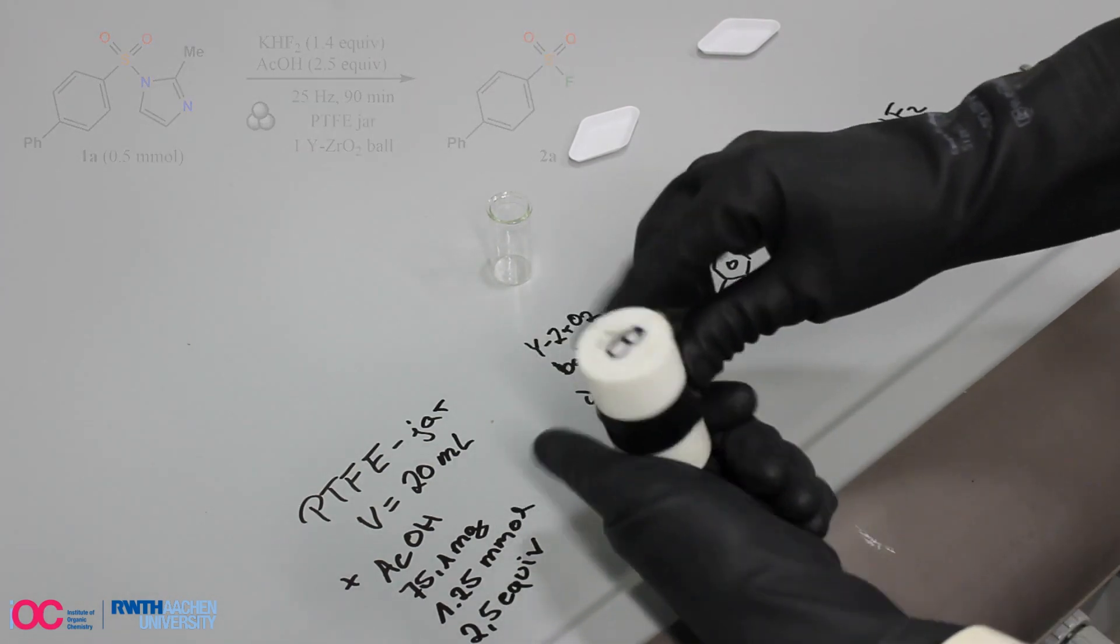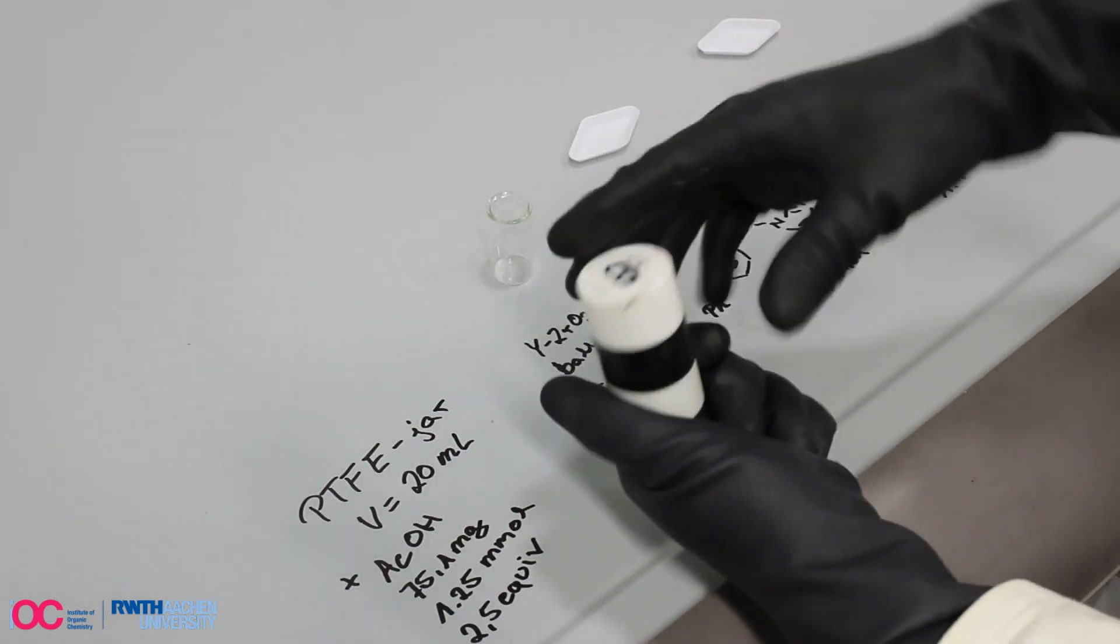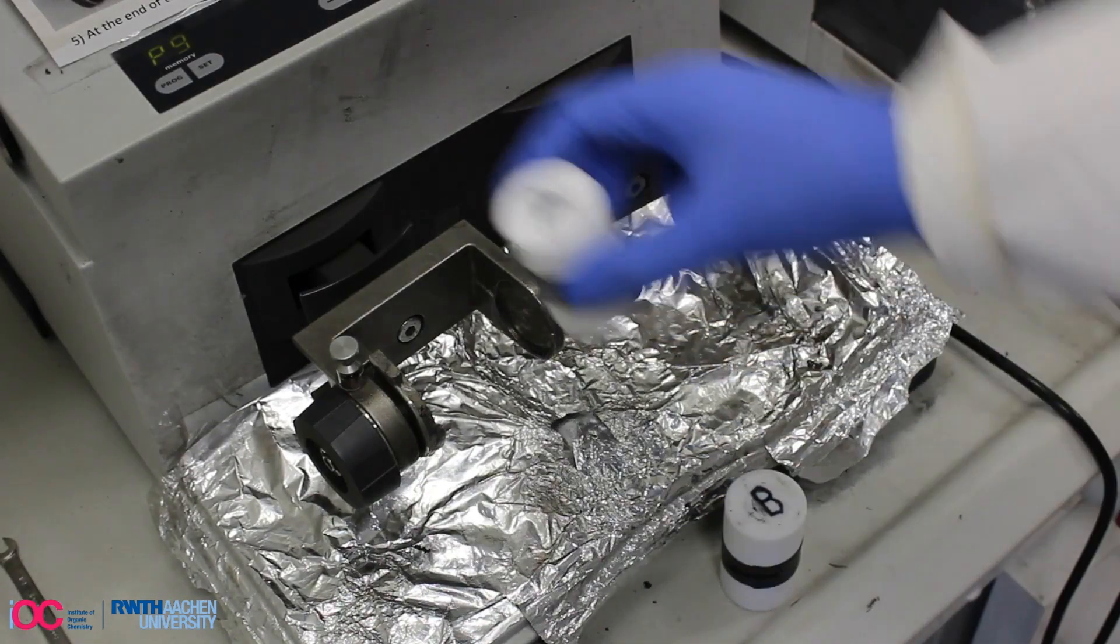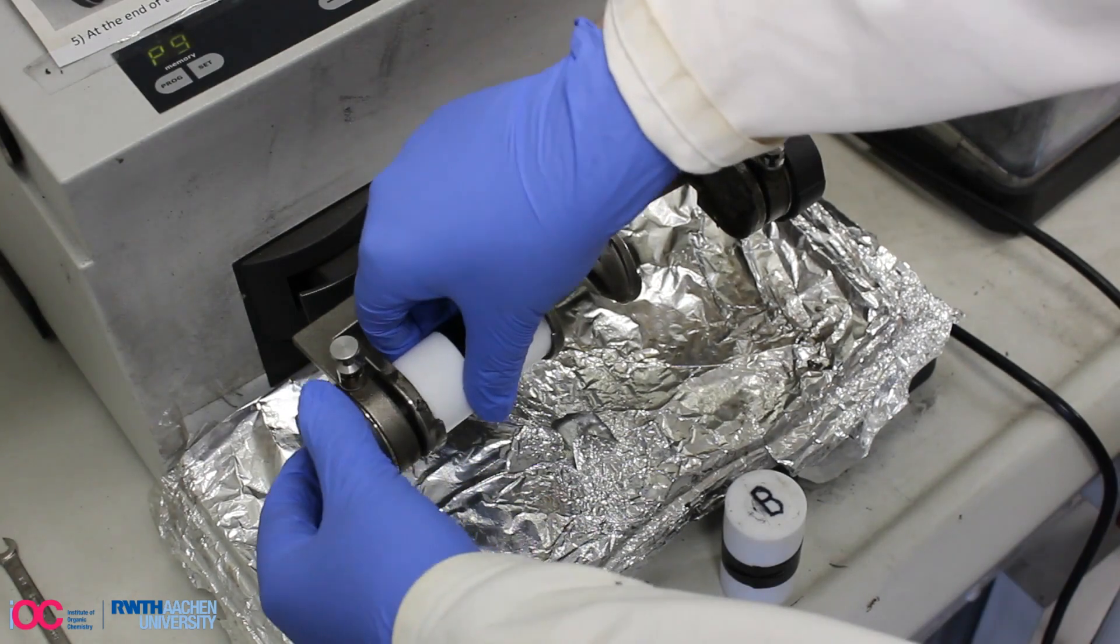The jar is immediately closed and additionally sealed with an insulating tape. Now the jar is mounted onto the holder of the milling device.